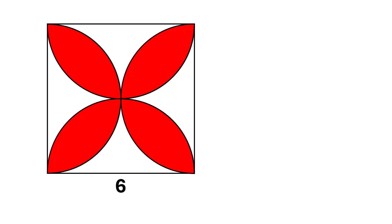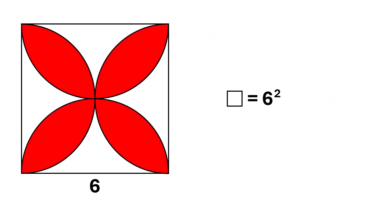Let's walk through the solution. The area of the square is six squared, which gives us 36 square units.